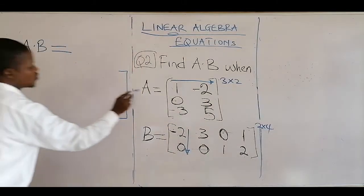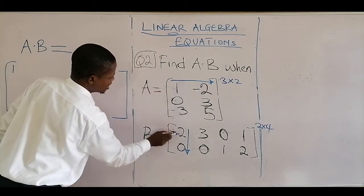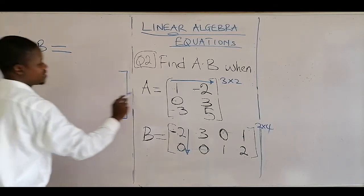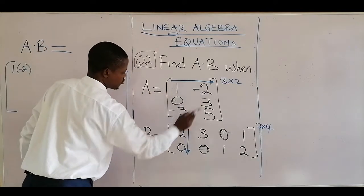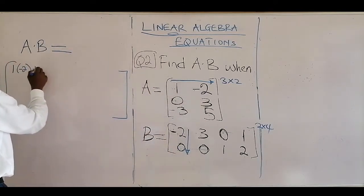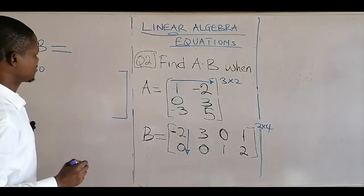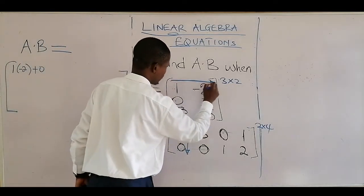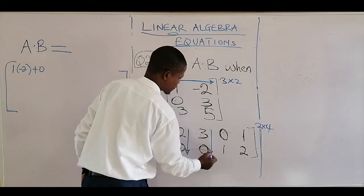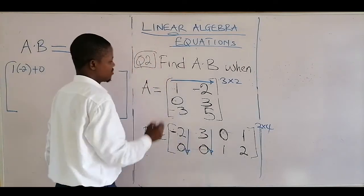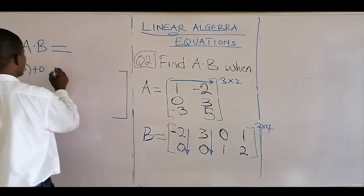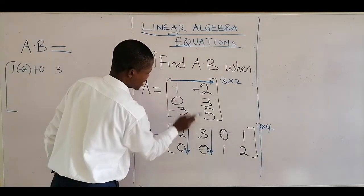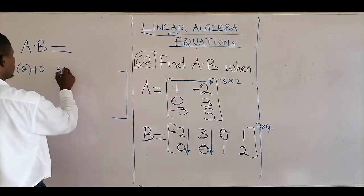For the first element, it's the first row against the first column: 1 times minus 2, and then minus 2 times 0, that's plus 0 — so the first element is minus 2. The second element is the same row against the second column: 1 times 3 is 3, and minus 2 times 0 is plus 0, giving 3.